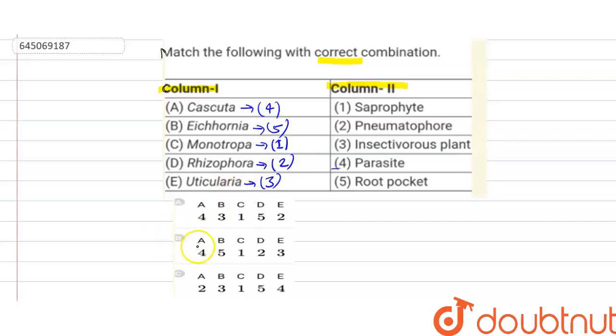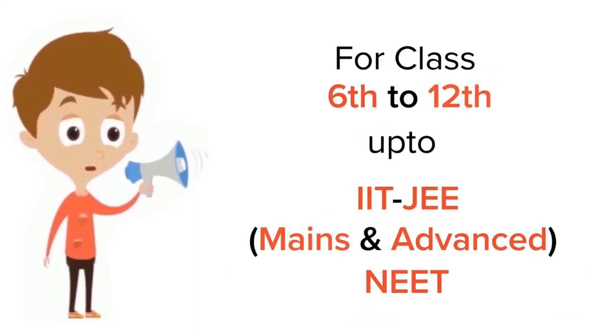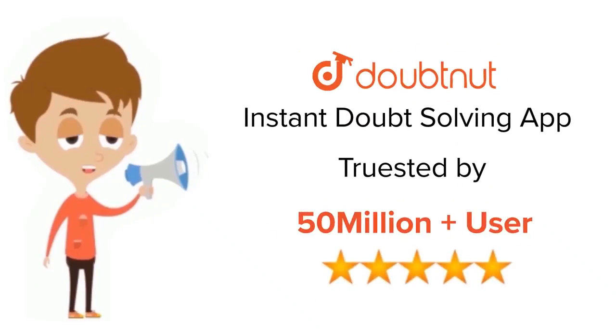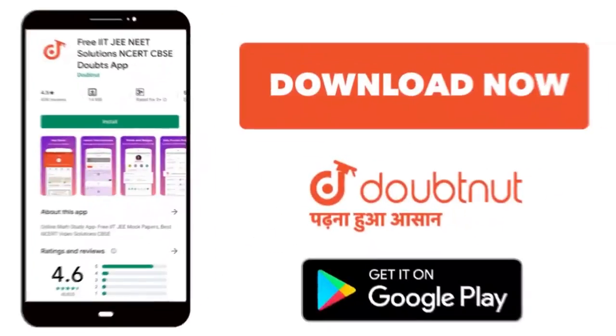So finally the answer is: A is matched with four, B is with five, C is with one, D is with two, and E is with three. So answer is B. Thank you. For class 6 to 12, IIT JEE and NEET level, trusted by more than 5 crore students, download Doubtnet app today.